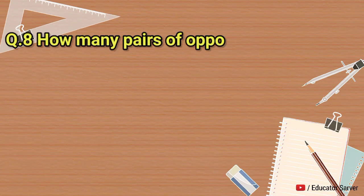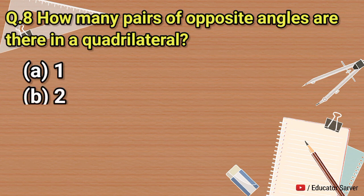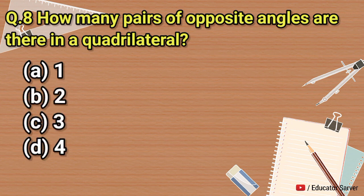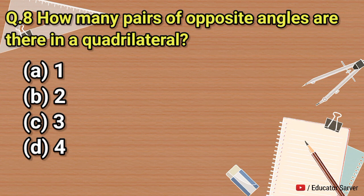Next question: how many pairs of opposite angles are there in a quadrilateral? Options are one, two, three, and four. The right answer is two.